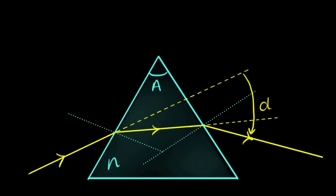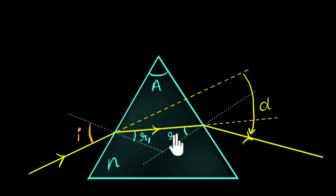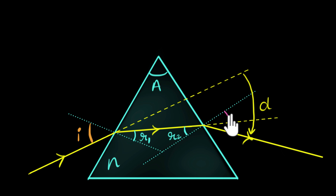To figure this out, let's name some angles. Let's call this incident angle as I. The ray of light got refracted, so let's call this angle as R1. Remember, our angles are always with respect to the normal. Similarly, over here, again there's an incident angle — we'll call this angle as R2, the angles inside the prism. And finally, the ray of light is emerging out, and we'll call that angle as the angle of emergence, E.